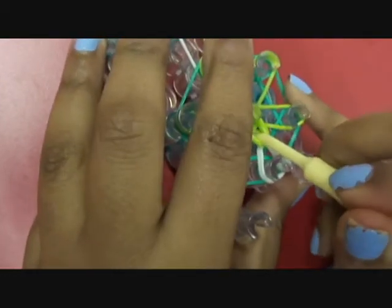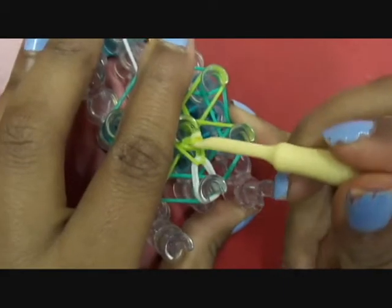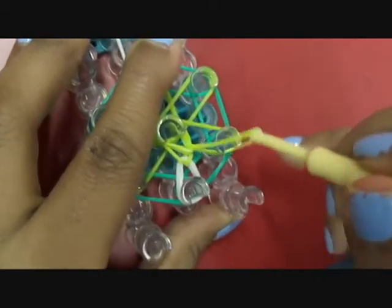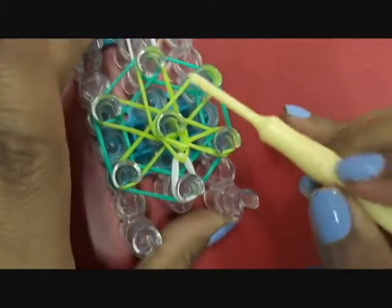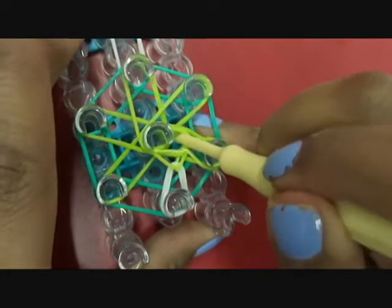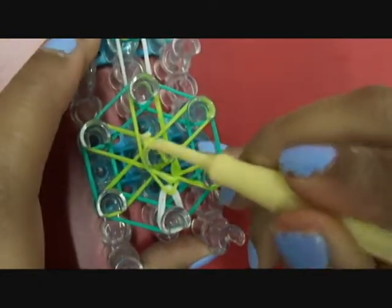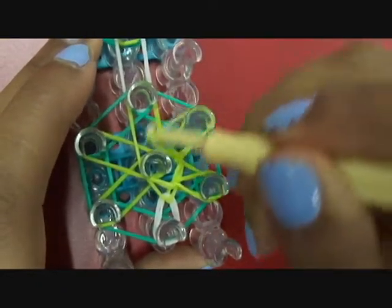Now once you have that done, you go inside the middle, push back those two bands that you placed on top, and grab the band that's at four o'clock and take it to the outside. You're gonna do the same thing all the way around, so you would grab the band on top in the middle and take it to the outside.